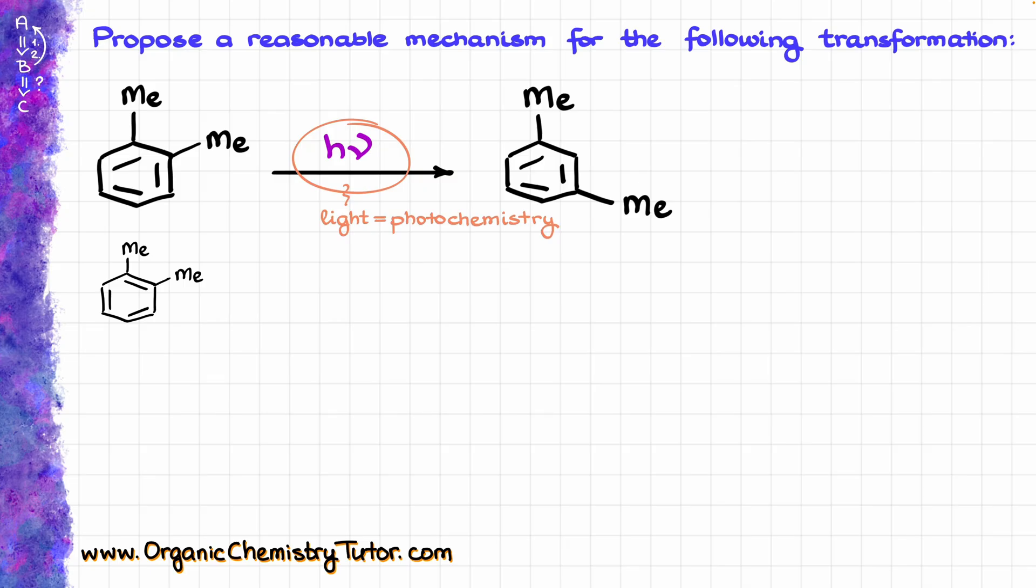In this particular case, what we are going to be seeing is one of our bonds that we have here, the double bonds, is going to split like so, giving us the corresponding bi-radical species looking like this.